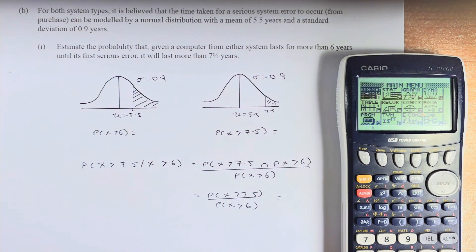For both system types, it is believed that the time taken for a serious system error to occur from the purchase date can be modeled by a normal distribution with a mean of 5.5 years and a standard deviation of 0.9 years. Estimate the probability that given a computer from either system lasts for more than 6 years until its first serious error, it will last more than 7.5 years.